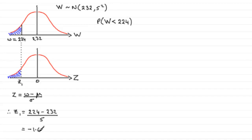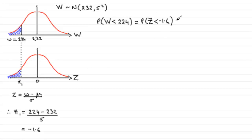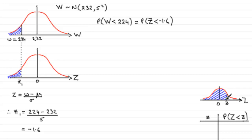Working this out gives minus 1.6. We expect a negative number because we are 1.6 standard deviations below the mean. So finding P(W < 224) is exactly the same as finding P(Z < -1.6). To proceed, we need to use the tables, which give probabilities to the left of any z-value that is to the right of zero — so a negative z-value is a problem.